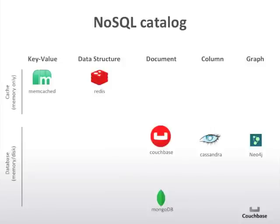Reading from left to right, first we have memcached — many would argue that memcached was a precursor to all NoSQL databases. In theory, it is an in-memory key-value store. We also have Redis, which is also an in-memory key-value store, but you can do a lot of operations on simple data structures like lists and sets, and those are processed in memory.